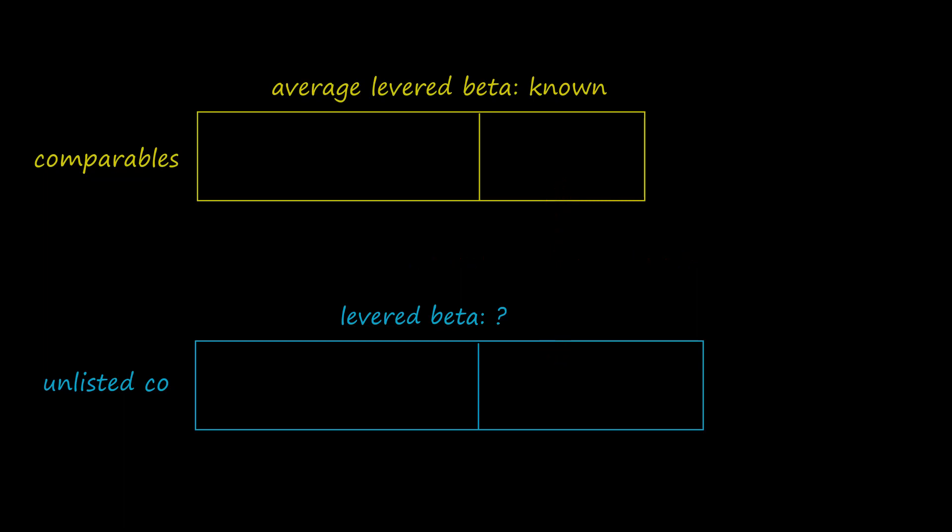If the business risks are similar, but the financial risks are different, the levered betas will not be directly comparable. Therefore, we can't simply use the comparables levered beta as our estimate of beta for the unlisted company.